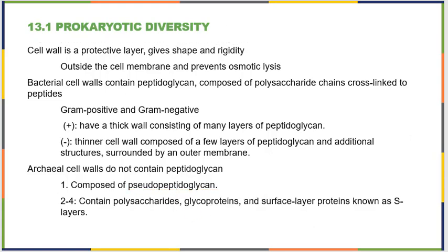We group archaeal cell walls into four major categories. One major category has a pseudopeptidoglycan — it looks similar but is not true peptidoglycan at the molecular level. The other groups contain polysaccharides, glycoproteins, and surface layer proteins called S-layer proteins. The key point is that archaeal cell walls do not contain peptidoglycan, but there isn't one single cell wall type that defines them all.